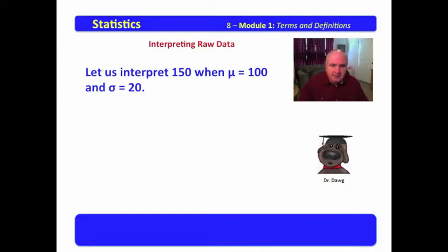Let us interpret 150 when mu equals 100 and sigma equals 20. We will start out with this diagram. This will become more and more familiar to you. Again, as we said before, it is a bell curve.